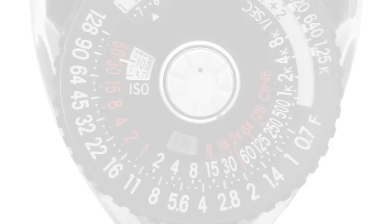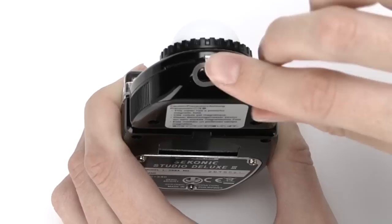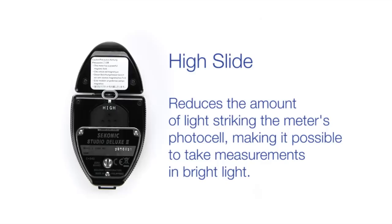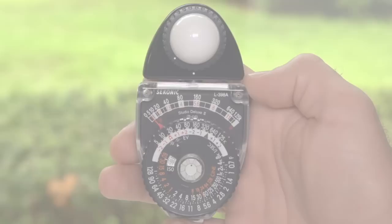When measuring light in bright outdoor conditions, insert the high slide, found on the back of the meter, into the opening on the top of the meter head. The high slide reduces the amount of light striking the meter's photocell, making it possible to take measurements in bright light.